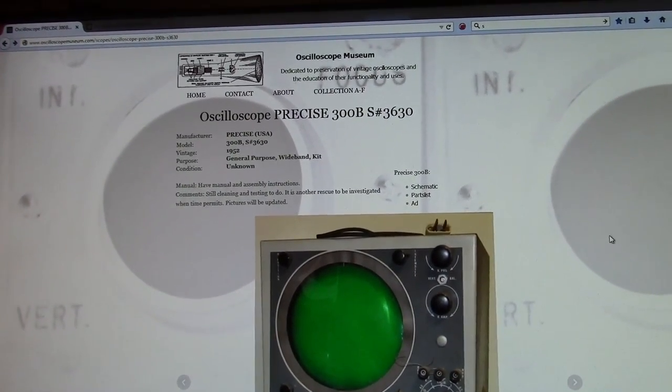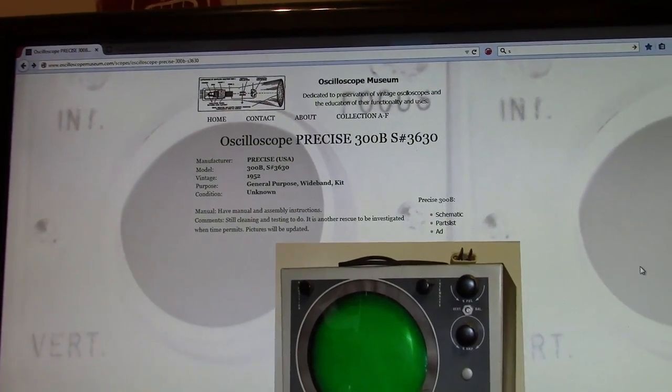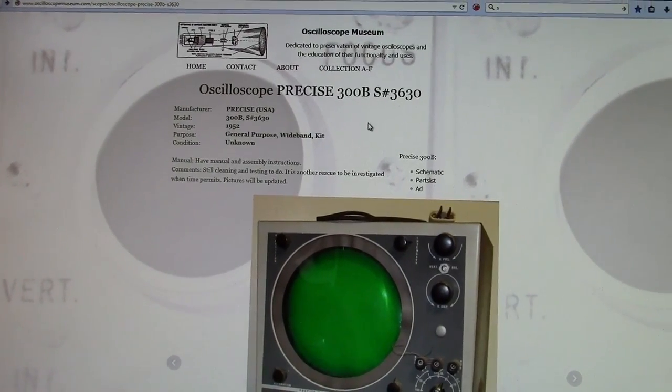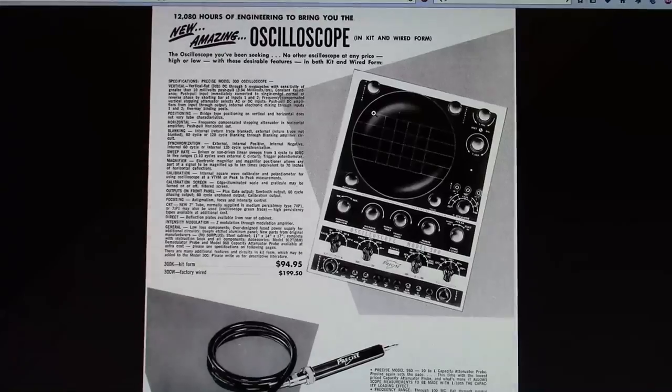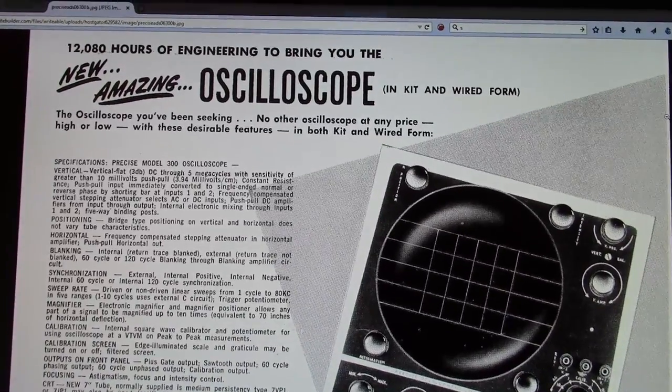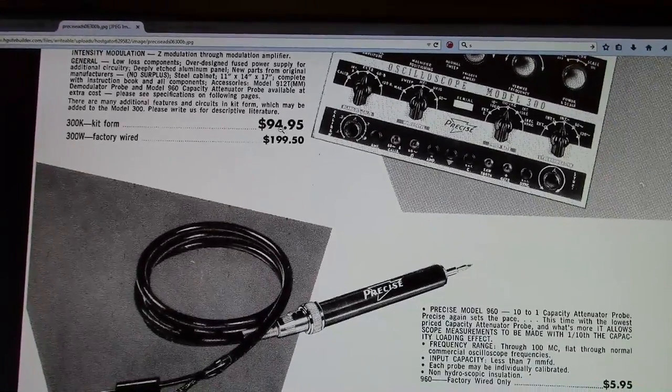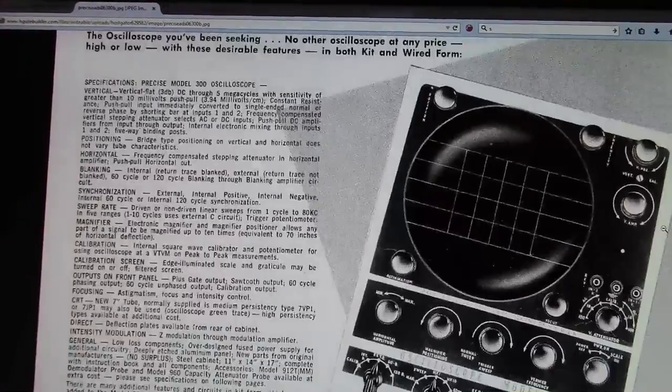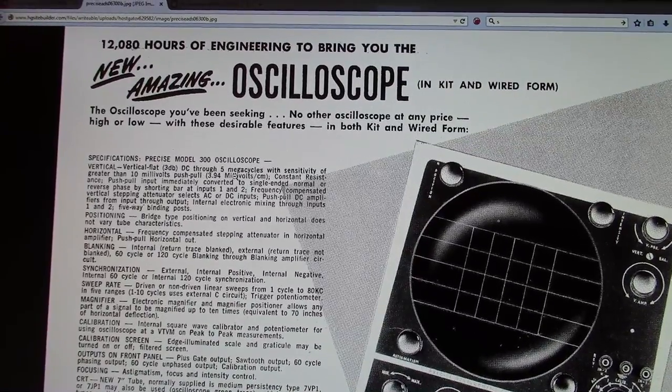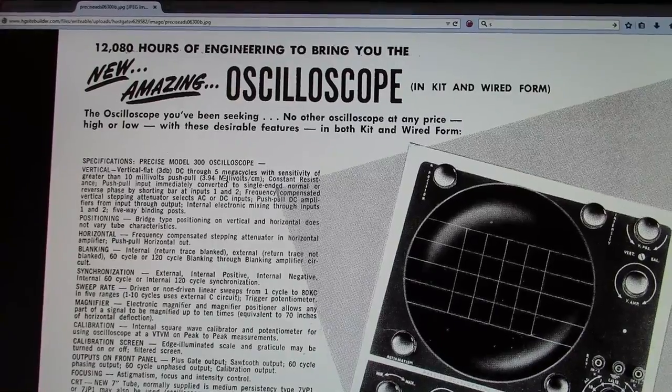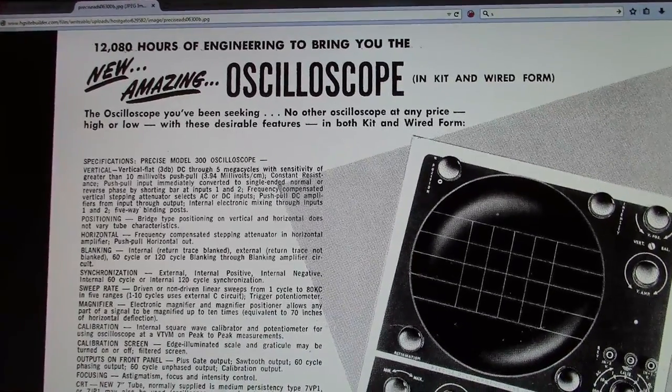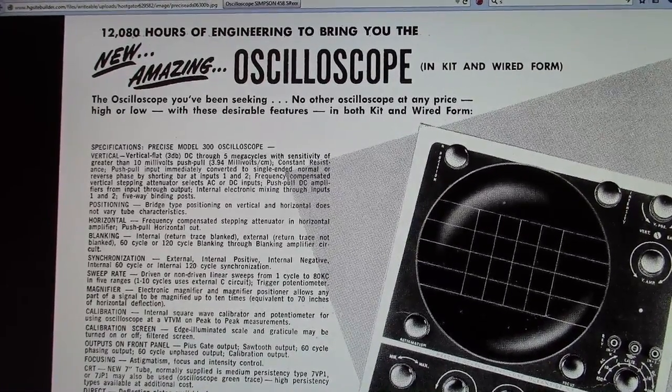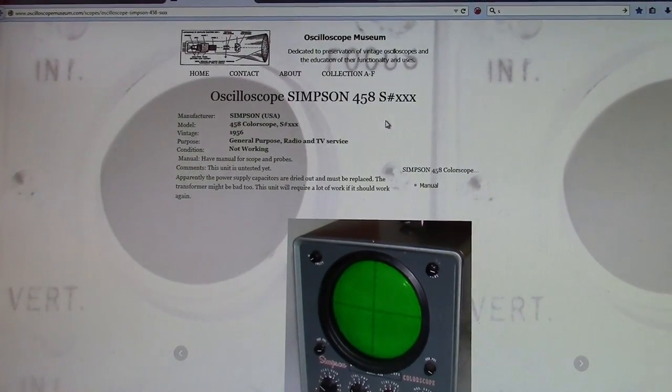Here's the website I was referring to, oscilloscopemuseum.com. All four scopes are there. Here's the Precise 300 from 1952. Here's an original ad for it, available both in kit and wired form. A kit for about $95 and factory wired for $200. And there's the original probe. And it gives all the specs and features. DC through five megacycle sensitivity greater than 10 millivolts. Kind of laughable by today's standards, but back then it was pretty respectable.